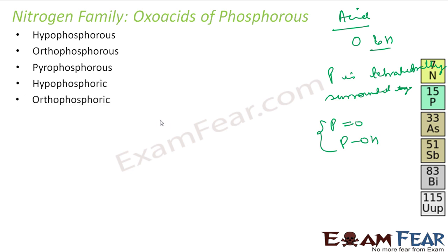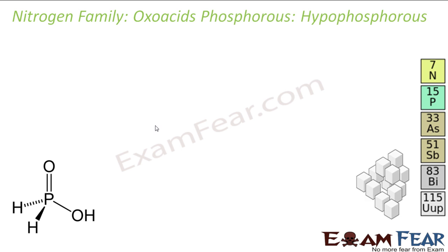Some of the common oxo acids are: hypophosphorus acid, orthophosphorus acid, pyrophosphorus acid, hypophosphoric acid, orthophosphoric acid, pyrophosphoric acid, and metaphosphoric acid. These are the common oxo acids of phosphorus.